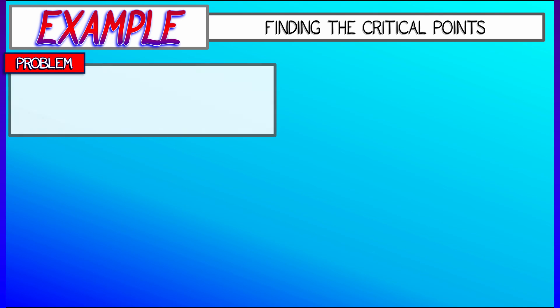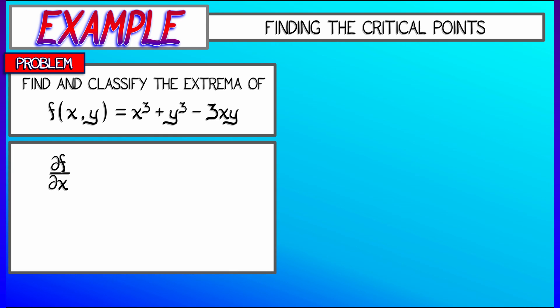Let's say that we've got a function f of x and y is x cubed plus y cubed minus 3xy. Compute the partial in x, and what do we get? We get 3x squared minus 3y. Then compute the partial with respect to y. We get 3y squared minus 3x.